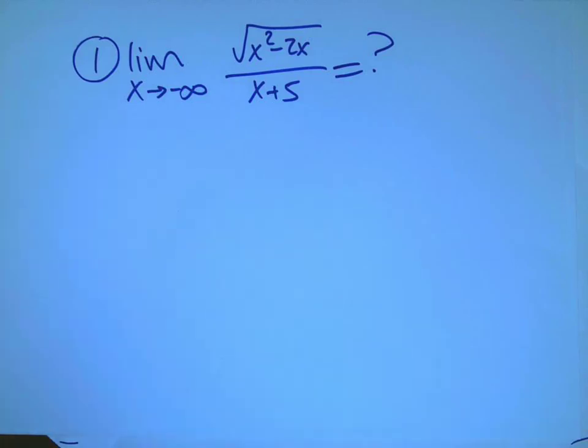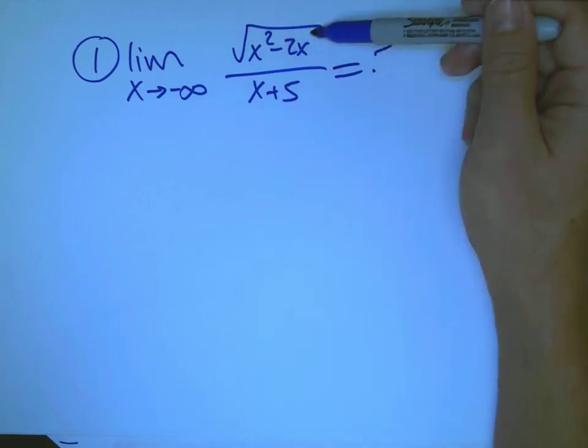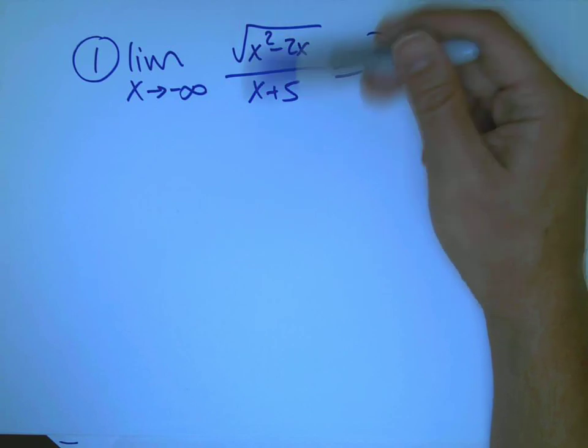Two tricky examples of limits at infinity. I've got a limit as x goes to minus infinity of this expression, and I want to know how to emulate what we were doing with rational functions.